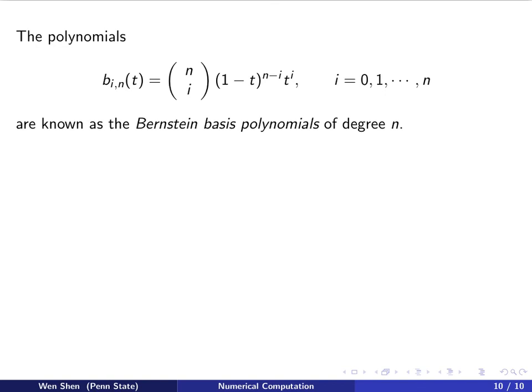These polynomials b_{i,n}(t) that stay in front of the points Pi have the form: binomial coefficient times (1-t)^{n-i} times t^i. They are well studied in the literature. These are known as the Bernstein basis polynomials of degree n.